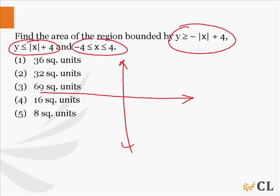The first graph says y is greater than equal to minus x plus 4, so the graph of this particular function will look like, if this is 4, something like this. The graph of this function will look something like this.